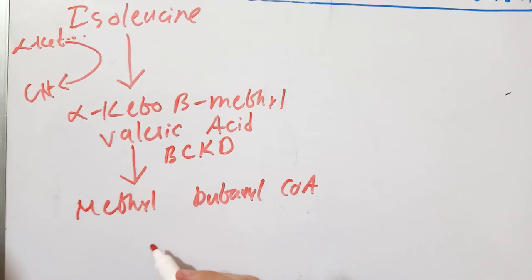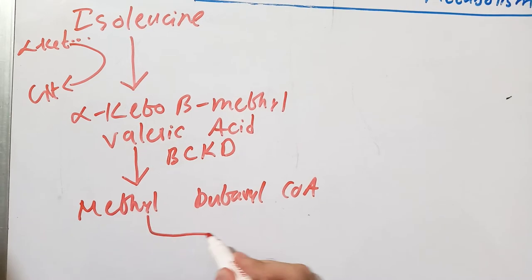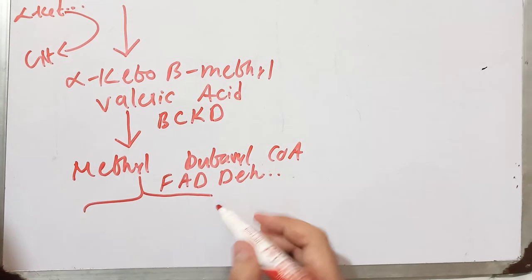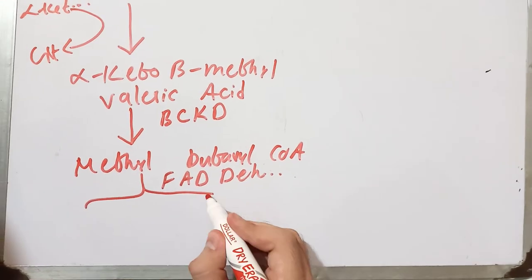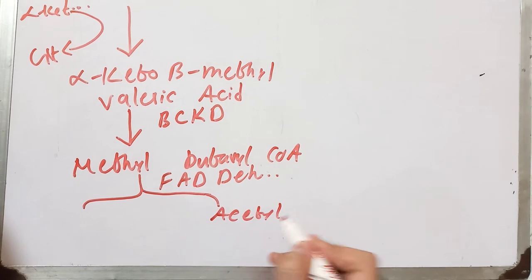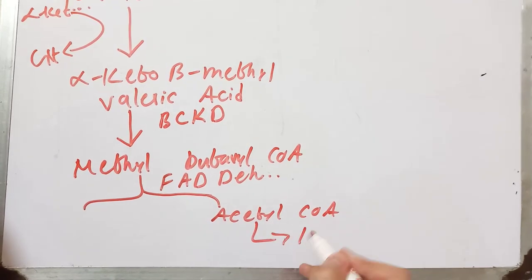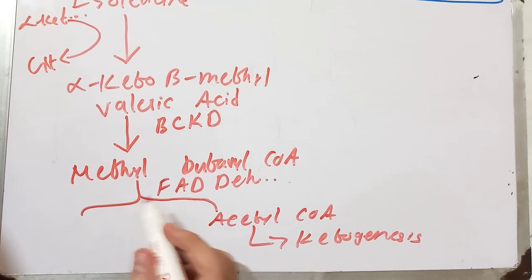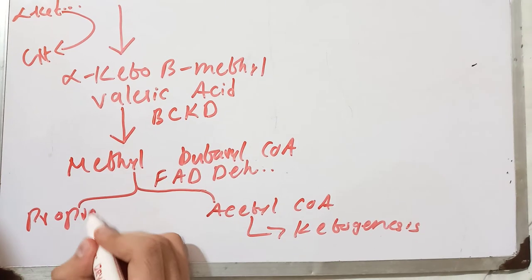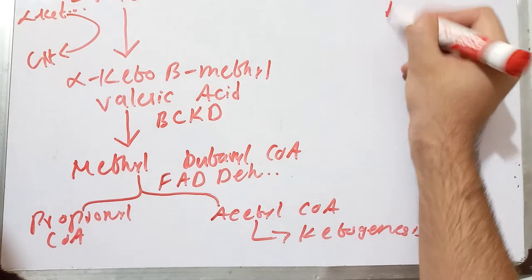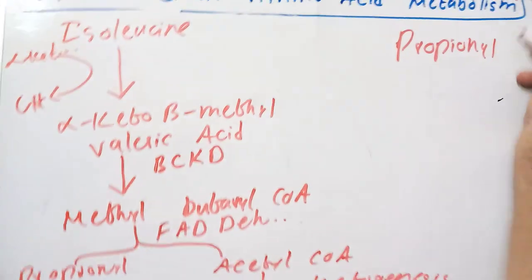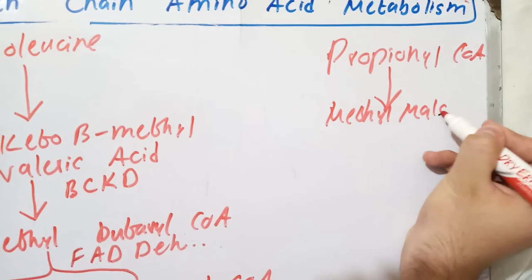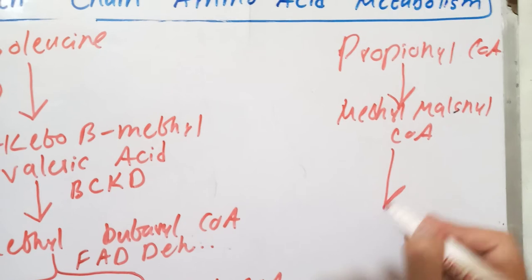Methyl-butyryl-CoA will undergo FAD-mediated dehydrogenation, and two compounds will be produced. The first compound produced is acetyl-CoA, which leads to ketogenesis — the formation of ketone bodies. The second compound produced is propionyl-CoA. Propionyl-CoA will convert into methylmalonyl-CoA.